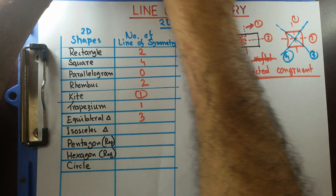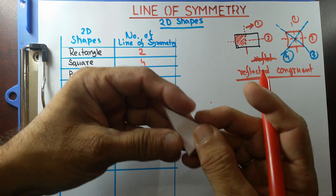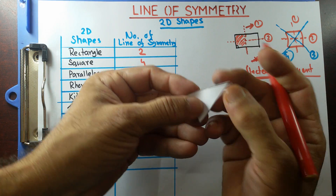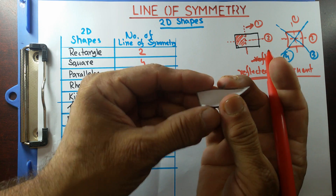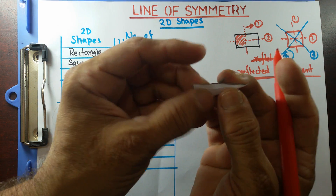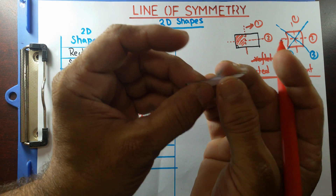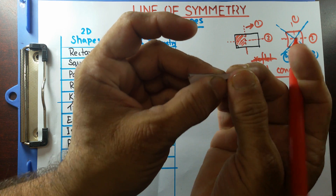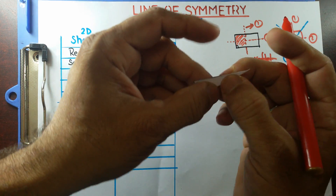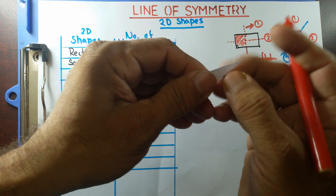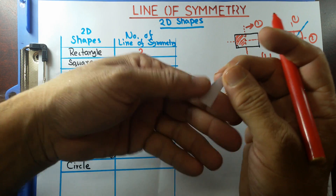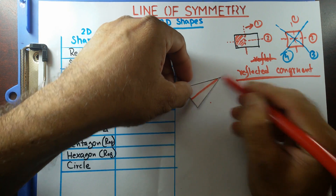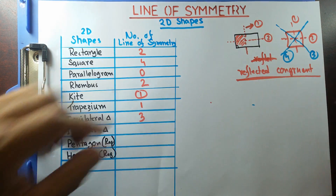Now let's try with the isosceles triangle. In an isosceles triangle, these two sides are equal. I'll have only one line of symmetry through the vertex — that is, the vertex whose angle is not equal to either of the other angles. So the isosceles triangle has one line of symmetry.